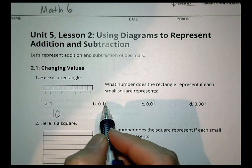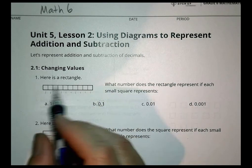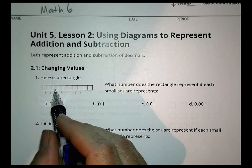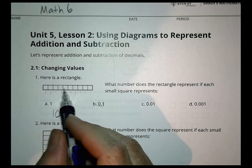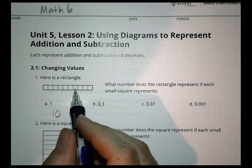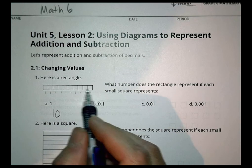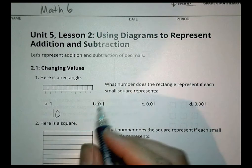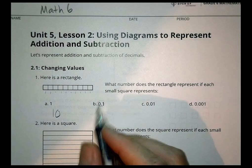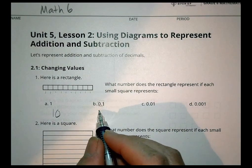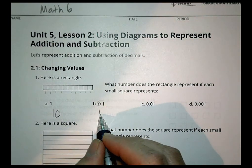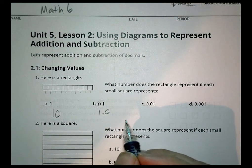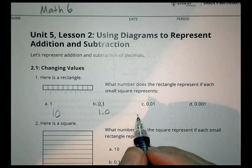Now, if each square was a tenth, we'd have one-tenth, two-tenths, three-tenths, and so on up to ten-tenths. How do you write ten-tenths? That becomes one — that's what you end up with.